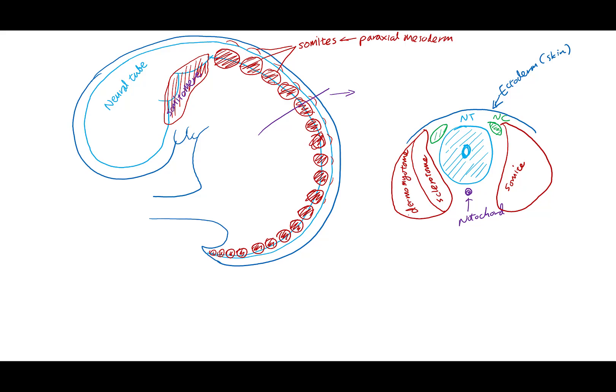As the muscles and dermis are forming, we need to innervate these structures early so we can start to control and regulate them. So from the ventral aspect of the neural tube, motor neurons differentiate and start to extend their motor axons all the way through the sclerotome to plug into the dermomyotome.